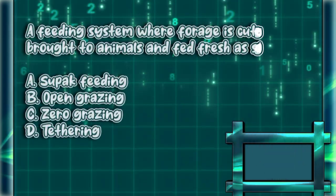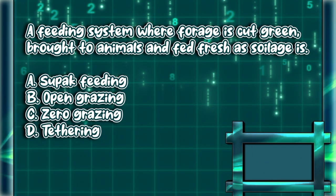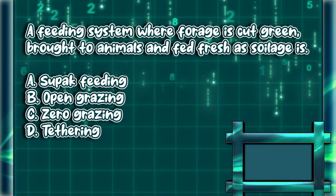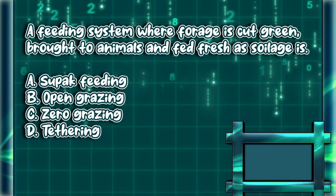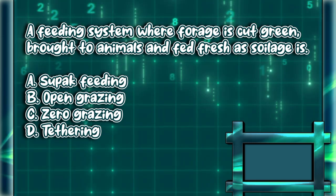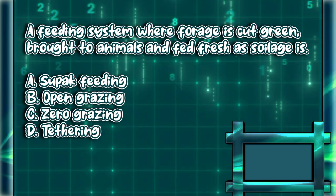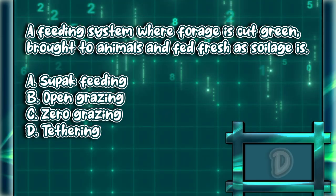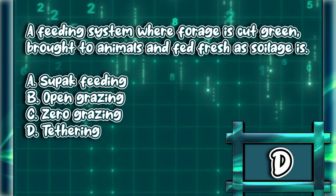A feeding system where forage is cut green, brought to animals, and fed fresh as soilage is: a) soilage feeding, b) open grazing, c) zero grazing, d) tethering. The answer is letter D.